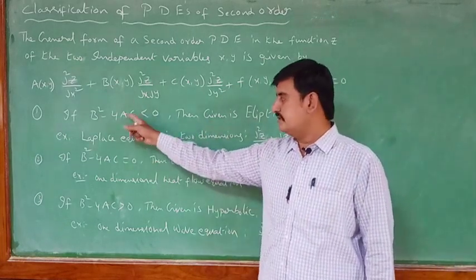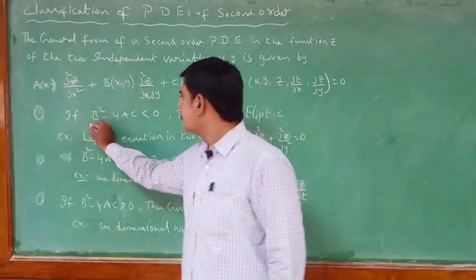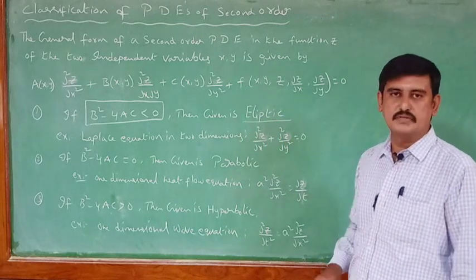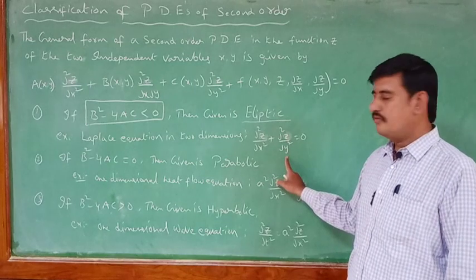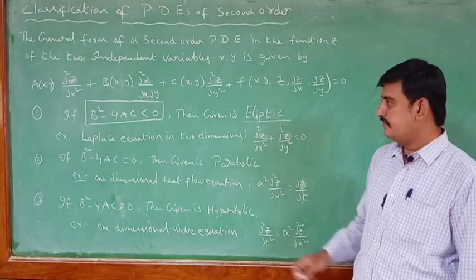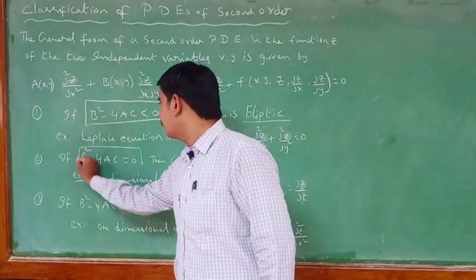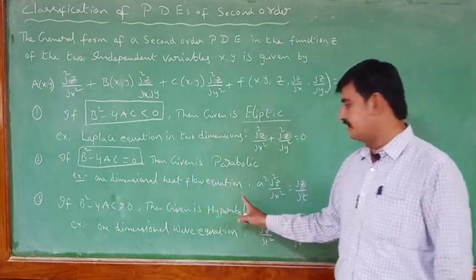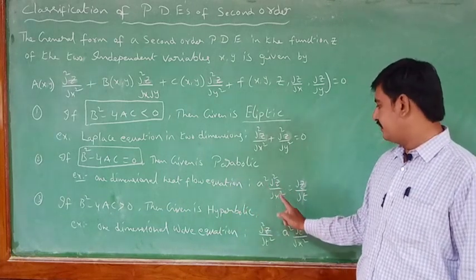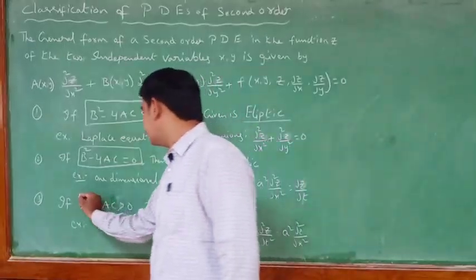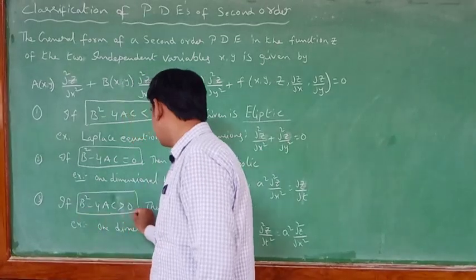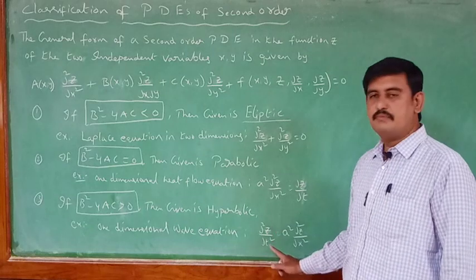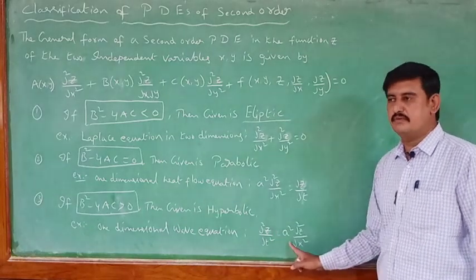To recap: if b² − 4ac < 0, the equation is elliptic (example: Laplace equation, ∂²z/∂x² + ∂²z/∂y² = 0). If b² − 4ac = 0, the equation is parabolic (example: one-dimensional heat flow equation, a² ∂²z/∂x² = ∂z/∂t). If b² − 4ac > 0, the equation is hyperbolic (example: one-dimensional wave equation, ∂²z/∂t² = a² ∂²z/∂x²).